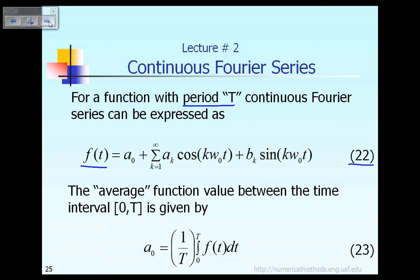If you look at equation 22, it says basically any periodic function f of t can be expressed as a linear combination of cosine and the sine function. Also in equation 22, you notice that a0, ak, and bk are constants that need to be defined very soon.